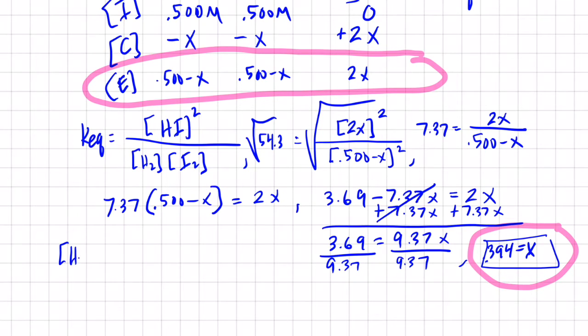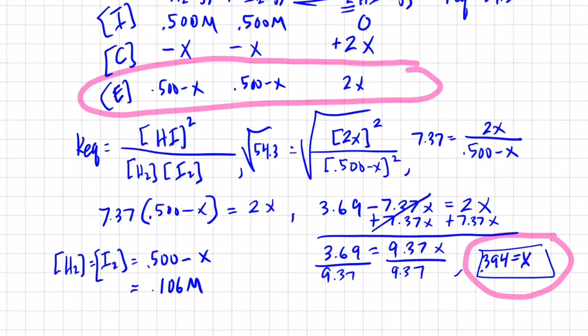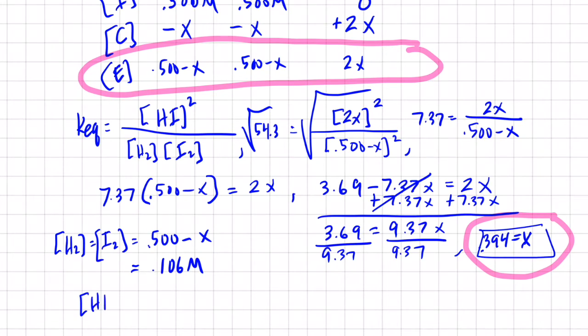We know the H2 concentration and the I2 concentration are going to be the same: 0.500 minus our X, which is 0.394, isn't it? So 0.500 minus 0.394 gives us 0.106. And it looks like our HI concentration is 2X. So HI concentration at equilibrium is 2 times X, and so that would equal 0.394 times 2, which is 0.788. So we have all of our reactants and products. We have their concentrations at equilibrium.